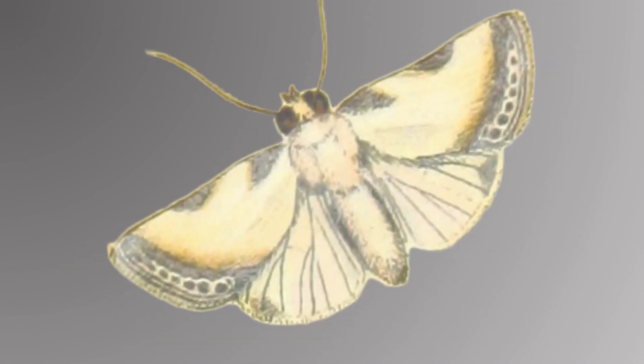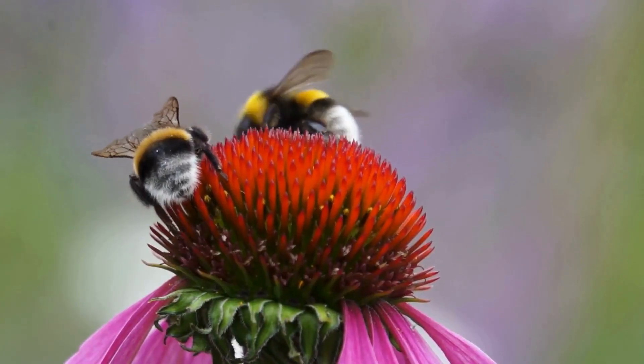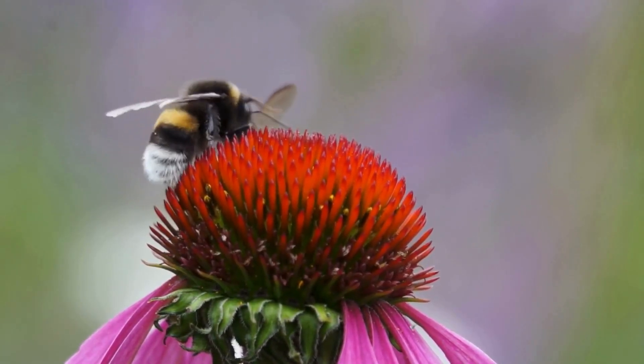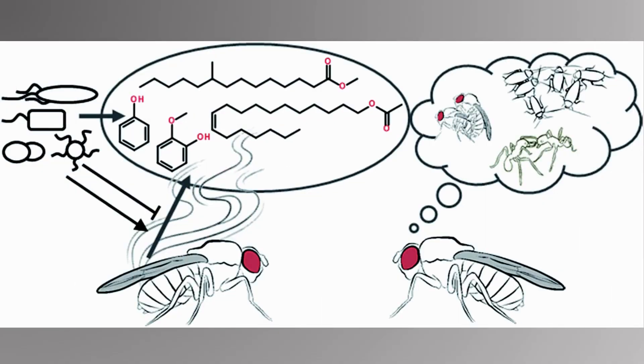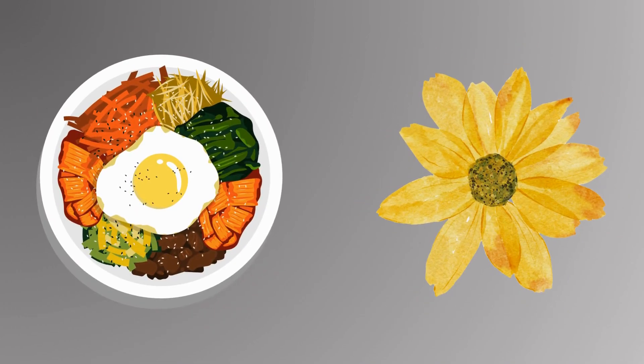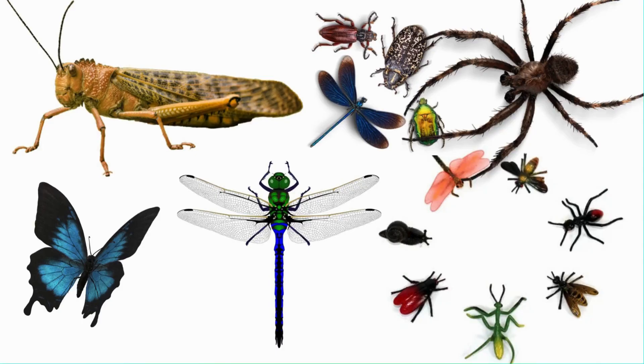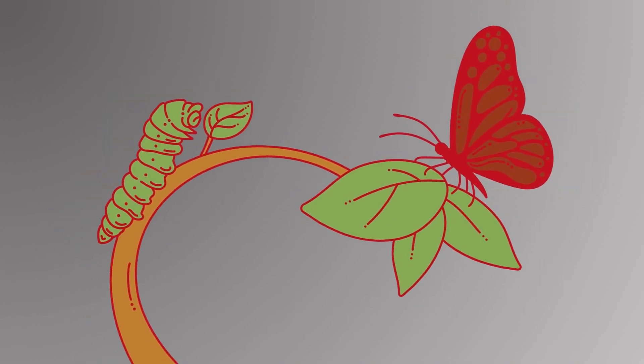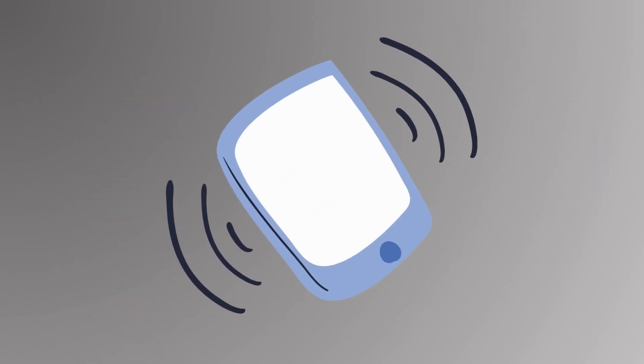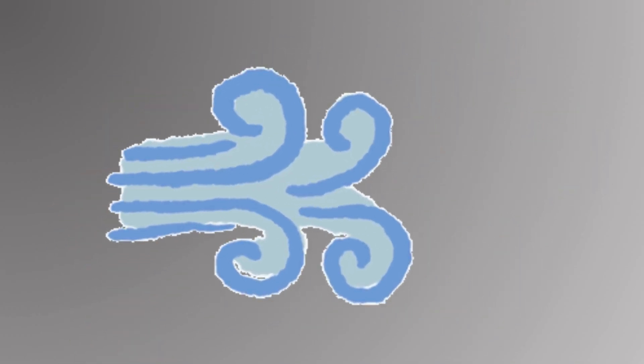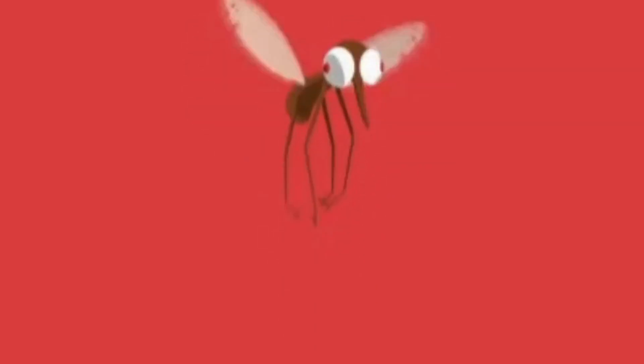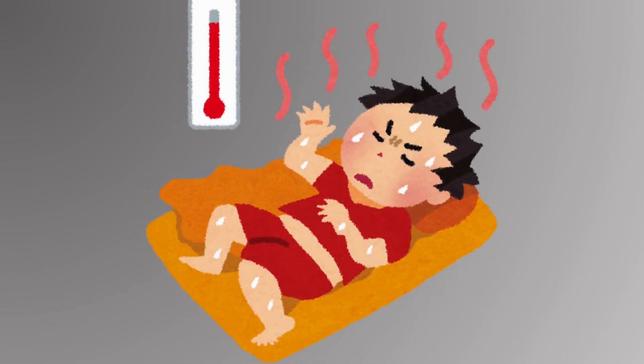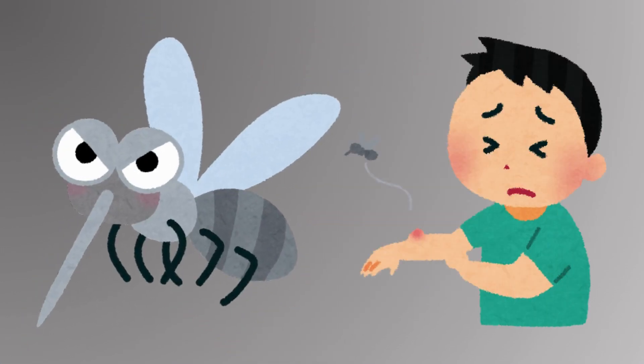Smell: Insects like moths or bees have incredibly sensitive olfactory systems, often located in their antennae, which they use to detect pheromones, food, or flowers from long distances. Touch and vibration: Many insects feel their environment through hairs on their body, detecting vibration or changes in airflow. Heat detection: Certain insects, like mosquitoes, can detect body heat, helping them locate warm-blooded hosts.